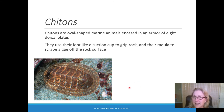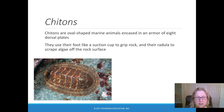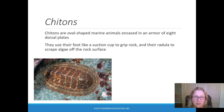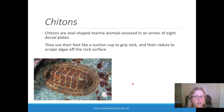Chitons are a smallish group. They have hard plates on the top, and if you flip one over, they have a foot that looks like a snail's foot and a radula they use to eat algae off rocks. They're well protected from predators by their flat shape, though they move very slowly.